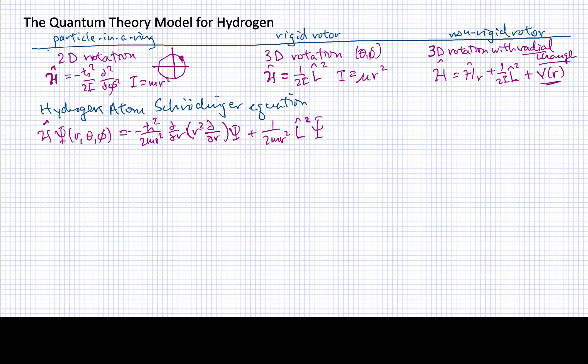Then we'll have a potential term. In the case of the hydrogen atom, that potential is the Coulomb potential, which we saw in the last video could be written like this.